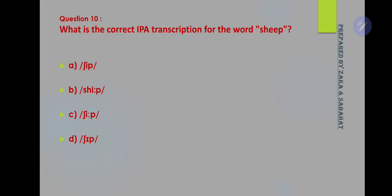Question number 10: What is the correct IPA transcription for the word 'sheep'? Option C is the correct answer. The first option might represent the word 'sheep' but is not in standardized IPA form. Option C is the correct standardized transcription, while the other options are non-standard forms.